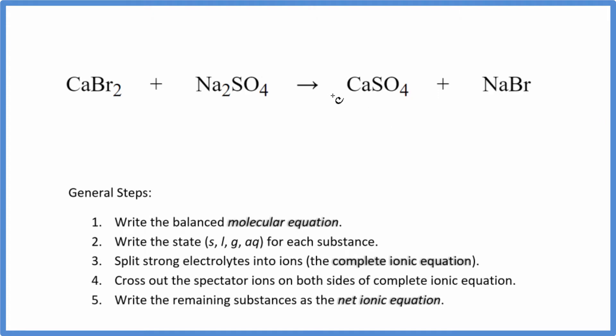So the first thing we need to do with net ionic equations is balance this molecular equation. I can see I have two sodiums here, but just one here. Let's put a two in front of the NaBr. Now I have two bromines, but I have two bromines here. One calcium, one calcium, and then one sulfate ion, and one there. So that's the balanced molecular equation.